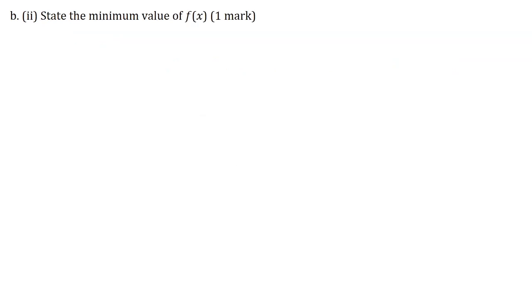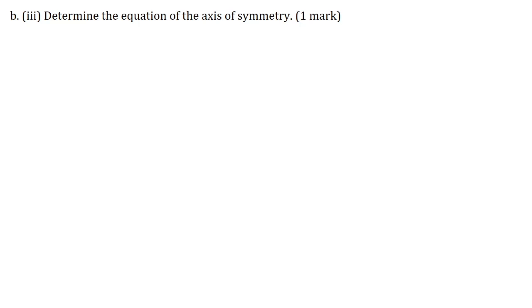Part B2: state the minimum value of f of x for 1 mark. The minimum value of f of x equals k, which equals minus 6. Part B3: determine the equation of the axis of symmetry for 1 mark. The equation of the axis of symmetry is given by x equals minus h. Since h is minus 1, x equals 1.